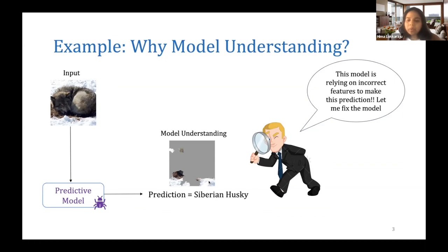In this case, what we see is that the model is in fact looking at the snow in the image to make this prediction, which means what we have built is a snow detector and not really a husky detector or an animal classifier. The model is using spurious features or incorrect features to make this prediction.